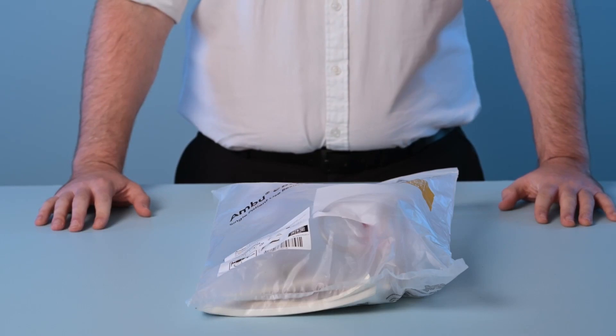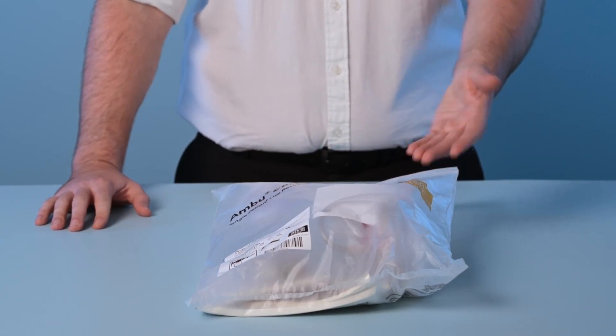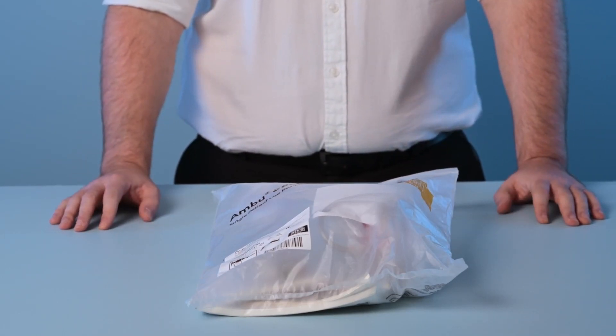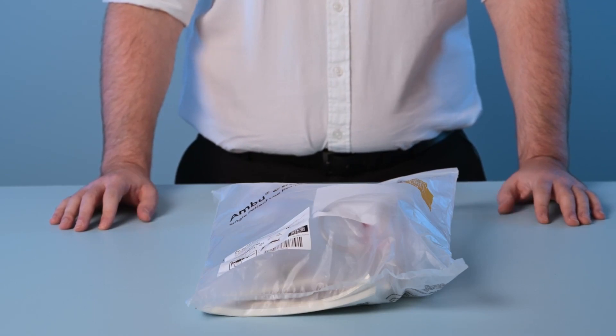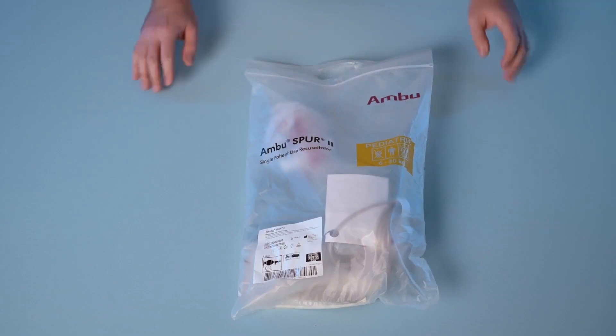Each Spur2 comes packaged in a color coded plastic pouch for easier size identification. The pouch also features a handle for better transportation.